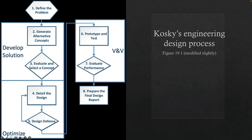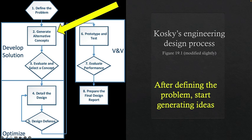Going back to our design process: we've talked about defining the problem at the top, and we're going to revisit that because we want to talk about performance standards — you'll need to generate some for your project. Today's concept is the creativity side: generating alternative concepts. After we define the problem, we start generating ideas, but we want a good problem definition including performance standards so we know what we're aiming at and what our goals are.